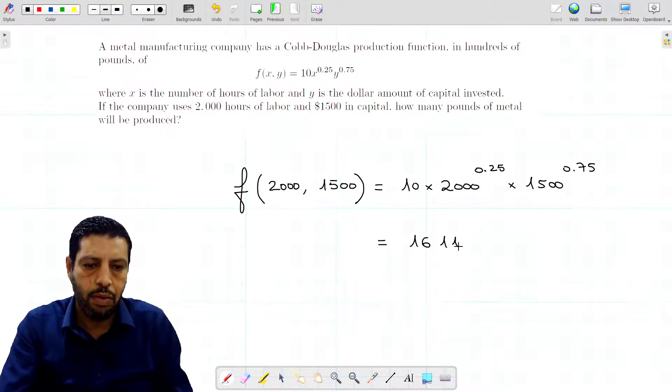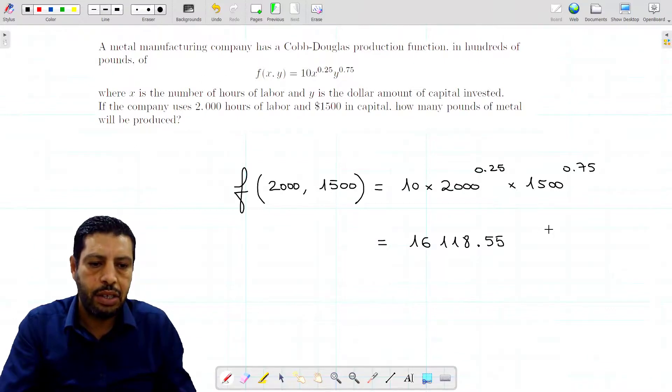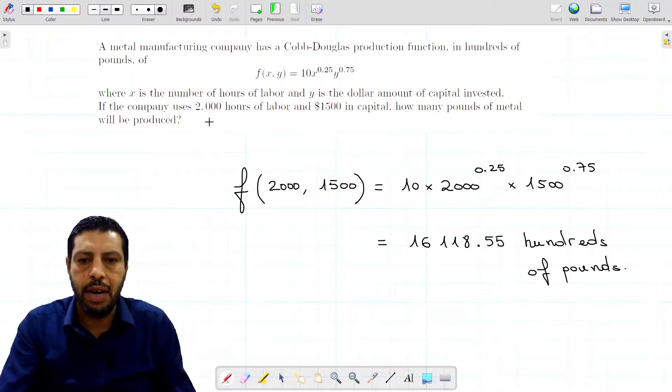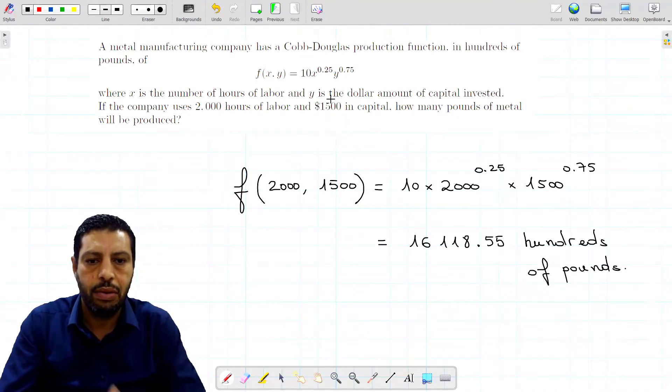16118.55. Be careful, the unit is hundreds of pounds. So this is the total production if 2000 labor hours are used and $4500 are invested. That's it, we are done with this activity. See you in the next video.